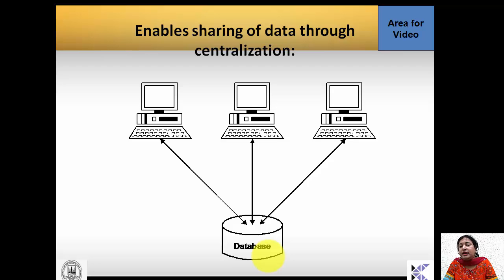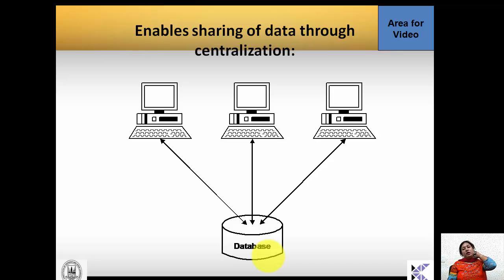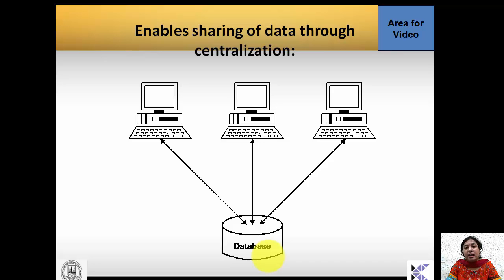DBMS can share data through centralization. The best example is core banking — previously unavailable — which enables anywhere banking: you can access your account from any branch in India or the world. This is possible because of a centralized database; when withdrawing money from an ATM, the query is fired from the centralized server, sharing data across all branches and ATMs.